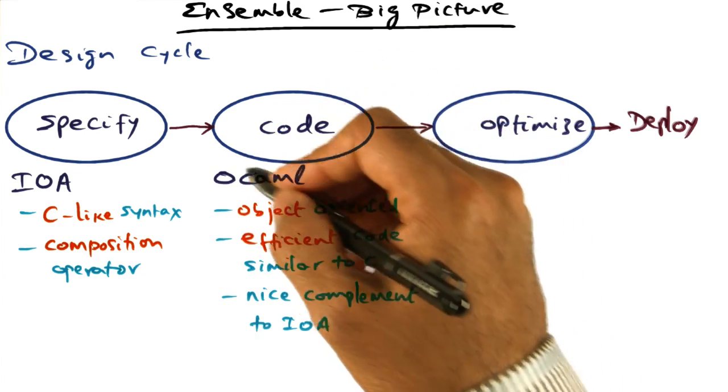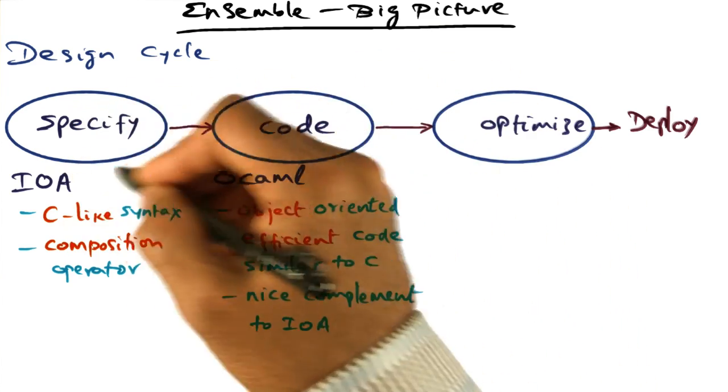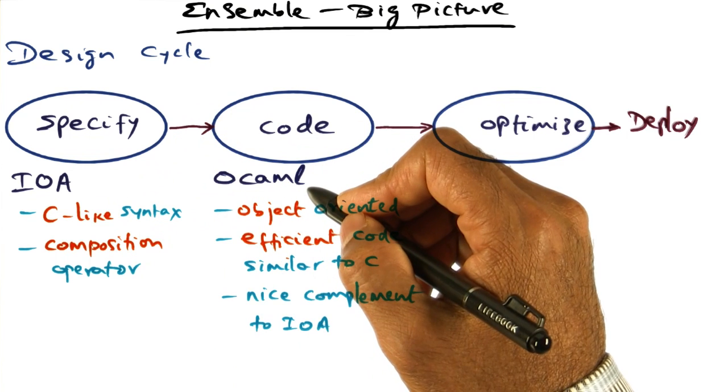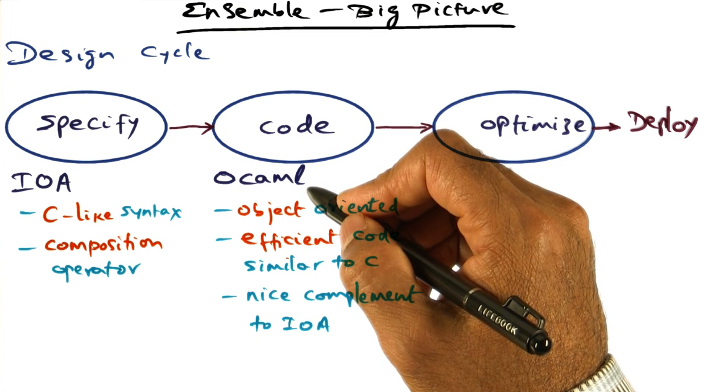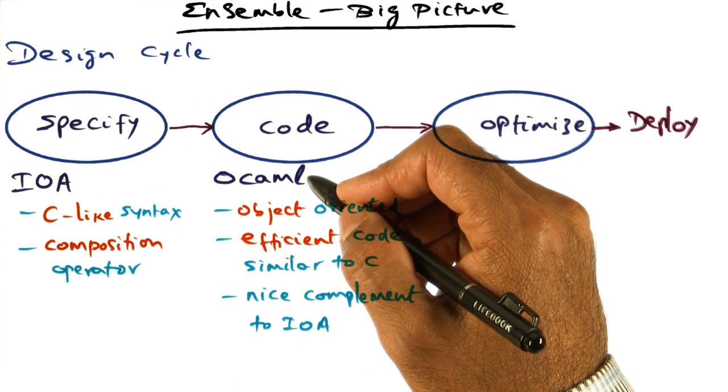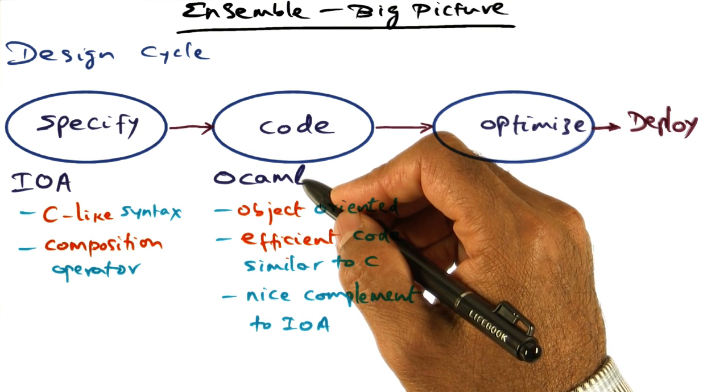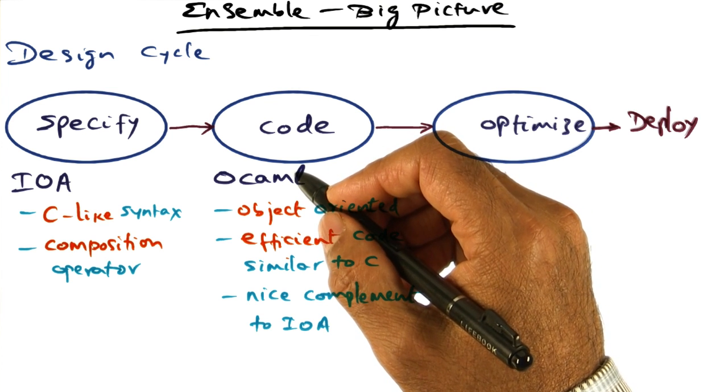The second part of the design cycle is converting the specification in IO Automata to code that can be actually executed. And for this purpose, the programming language that is used is a high-level programming language called OCaml.